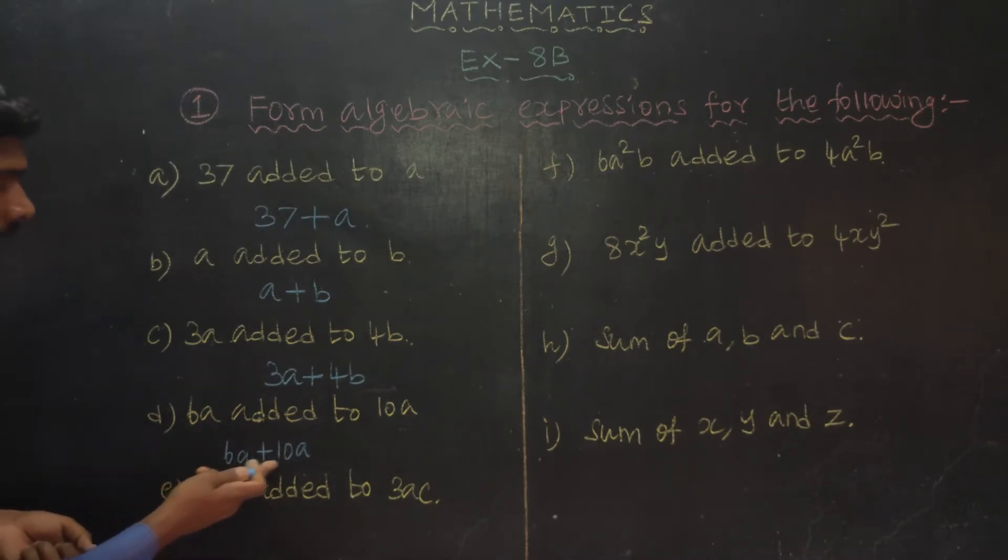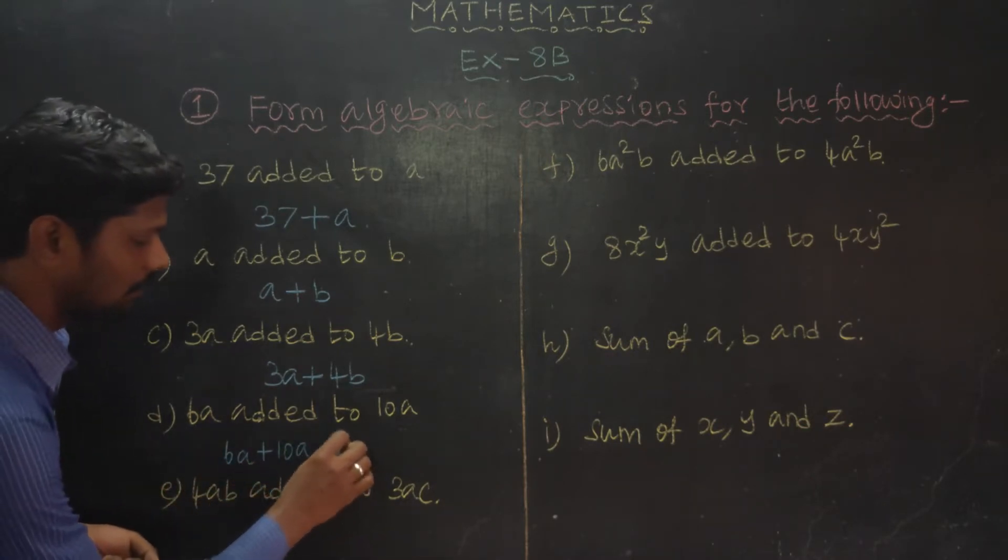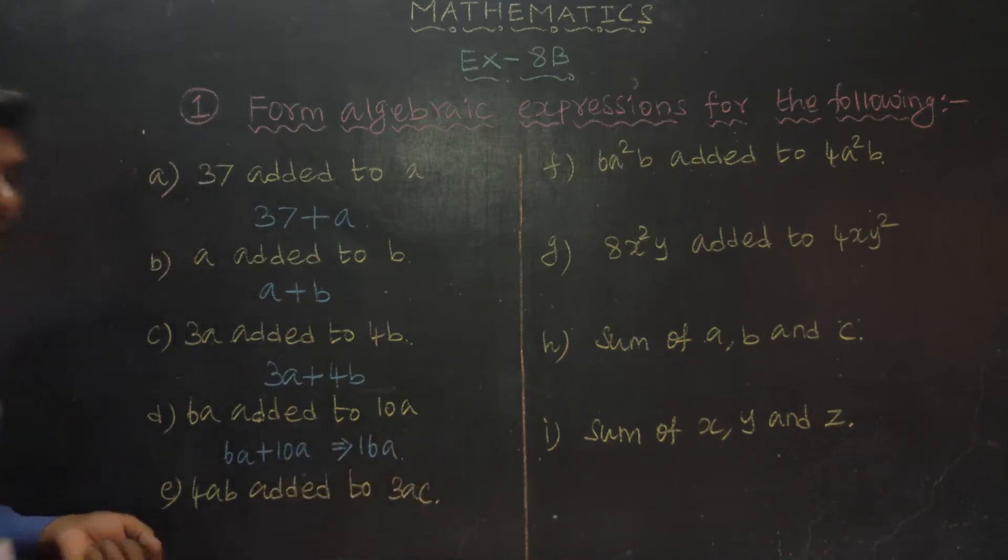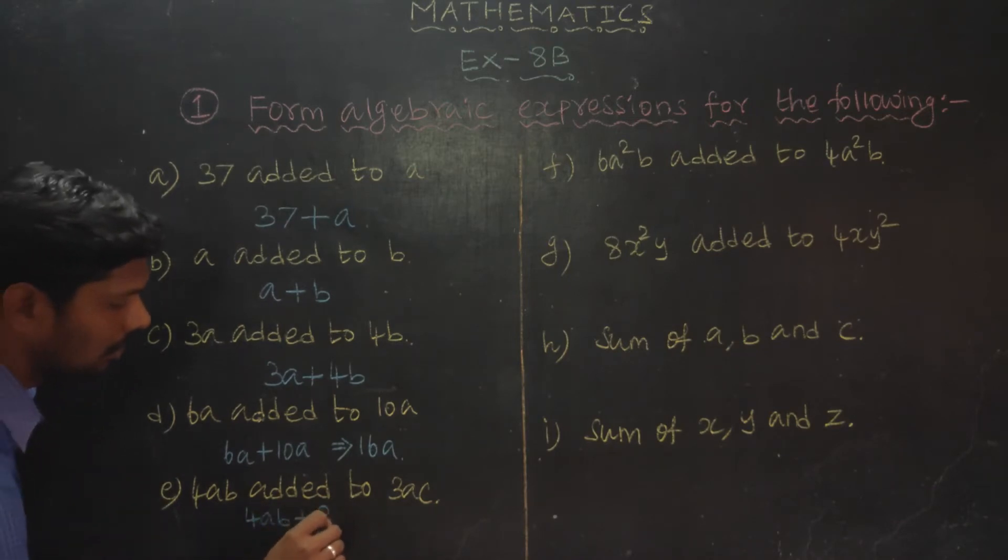6A plus 3A equals 16A. Next, 4AB added to 3AC. 4AB added to 3AC.